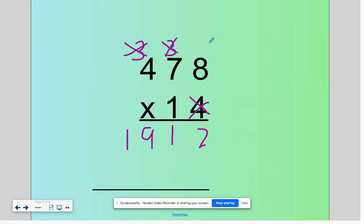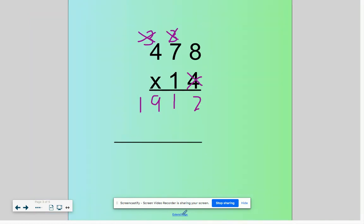For our next problem, I've done the first line. 478 times 14. 4 times 8 is 32. Put my 2, carried our 3. 4 times 7 is 28, plus 3 is 31. Put my 1, carried my 3. 4 times 4 is 16, plus 3 is 19. Kill our 4, carry it with a 0.